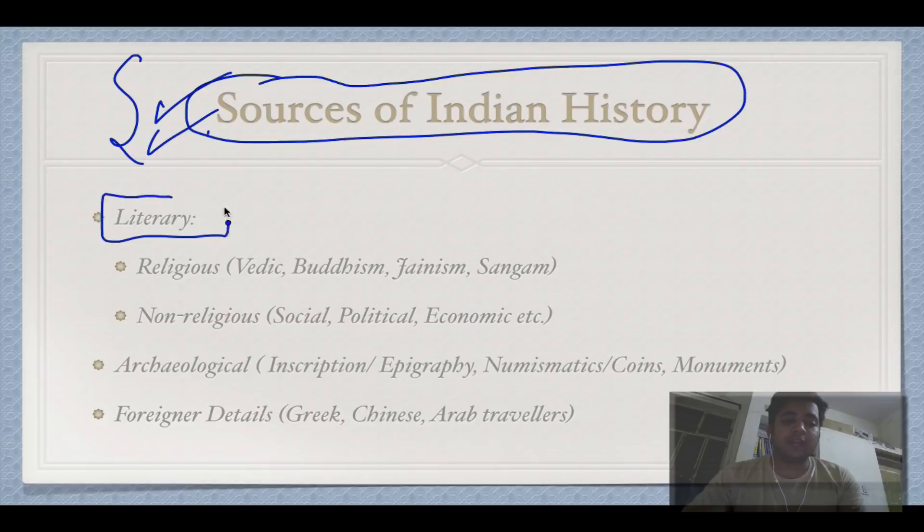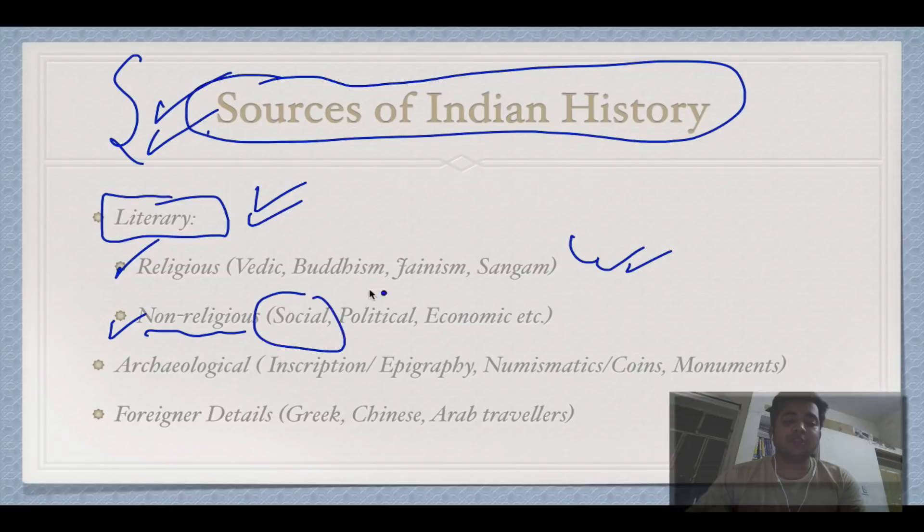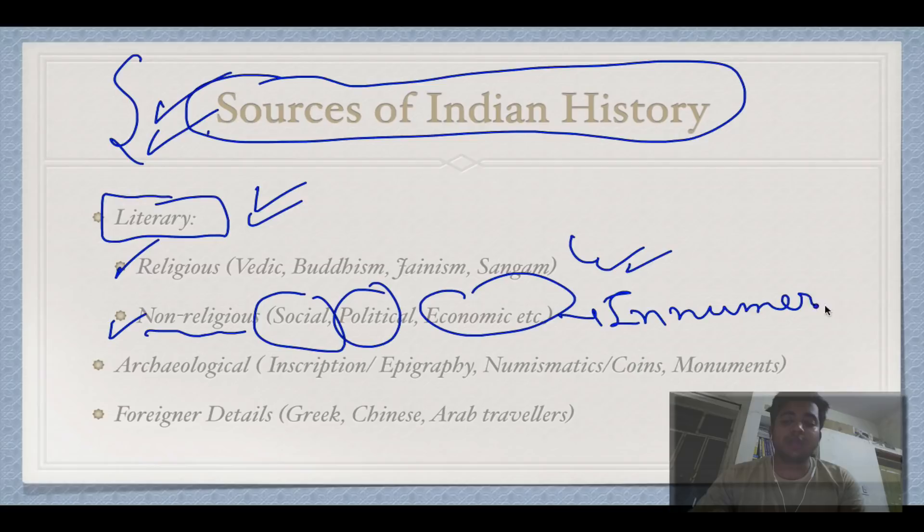Sources are extremely important. First, there are literary sources, which are divided into religious and non-religious. We will deal with religious sources — Vedic, Buddhism, Jainism, and Sangam — in detail. Non-religious sources include social, political, and economical books, of which there are innumerable.